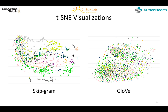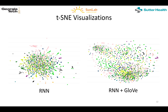Because of the time limit, we'll go right into the experiment results. We show a visualization of the learned representations and start with the baseline models. The left side shows skip-gram embeddings and the right side shows GloVe embeddings. Each dot represents a diagnosis code, and the color represents the most general or most abstract category in the ICD-9 hierarchy. We also show an RNN baseline — a visualization of the embedding matrix learned end-to-end when training the RNN for a prediction task. The right one is where we initialize the embedding matrix with GloVe and then fine-tune it with RNN.